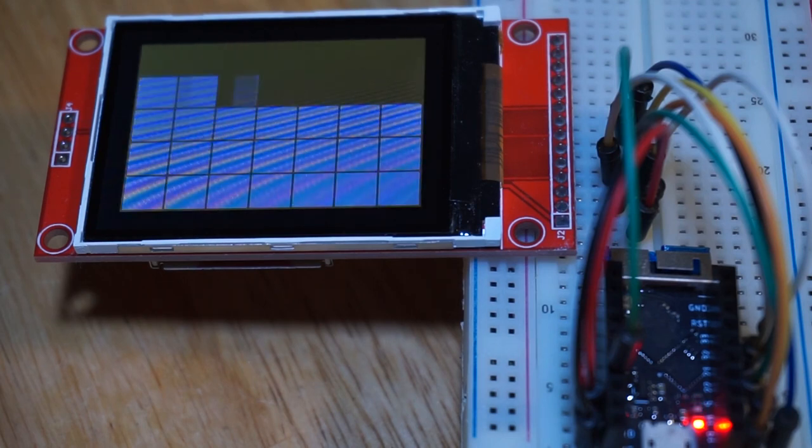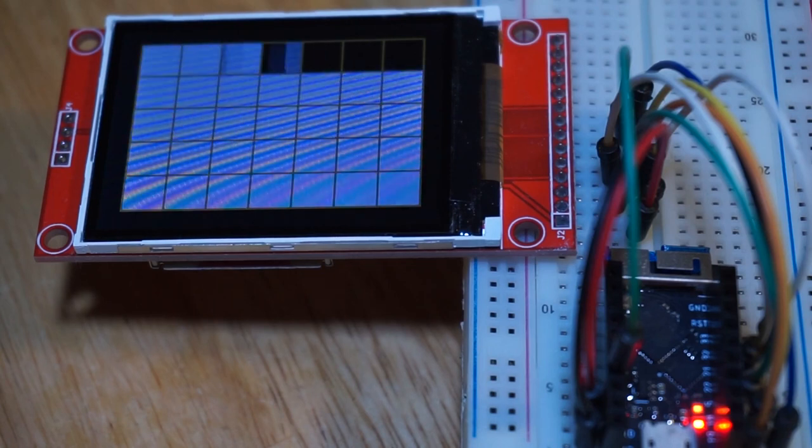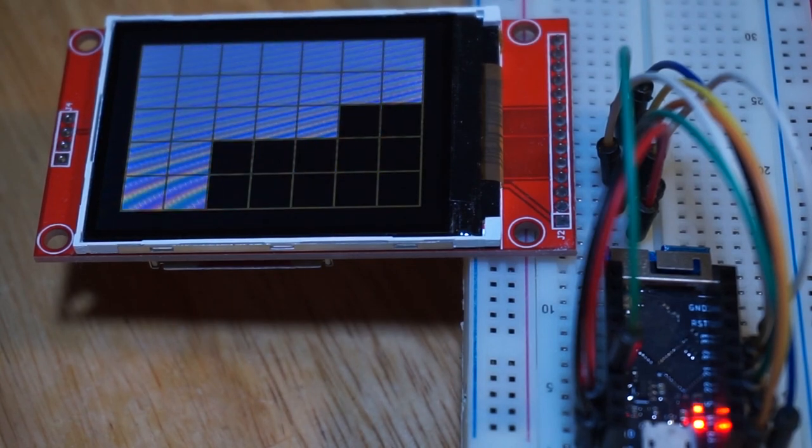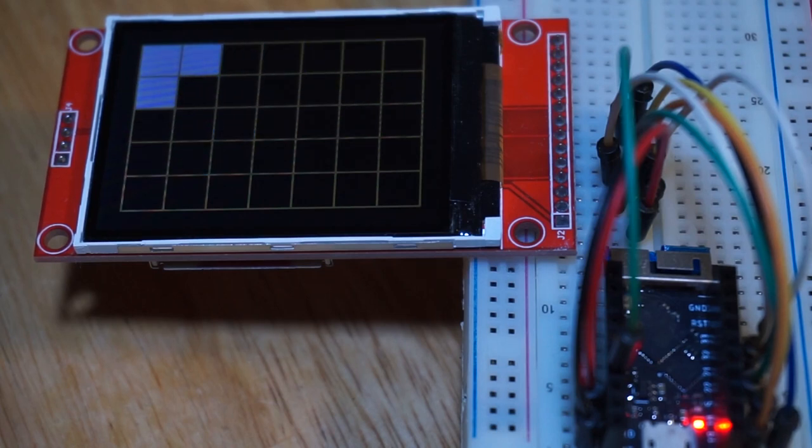It starts selecting moves pretty much randomly. As it starts to discover that certain board configurations are of greater value than others, you should see this reflected in the differing colors of the blocks.